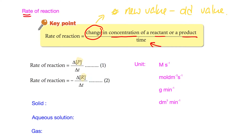For rate of reaction with respect to products, the new value minus old value over time gives a positive rate. For reactants, as time goes by the reactant decreases, so new value minus old value is negative. Therefore, the rate of reaction with respect to a reactant carries a negative sign — to indicate that the reactant is being consumed. Rate of reaction for a reactant is negative; for a product it is positive.